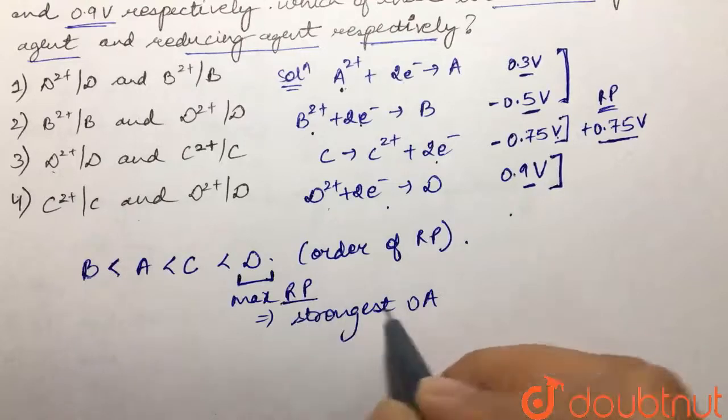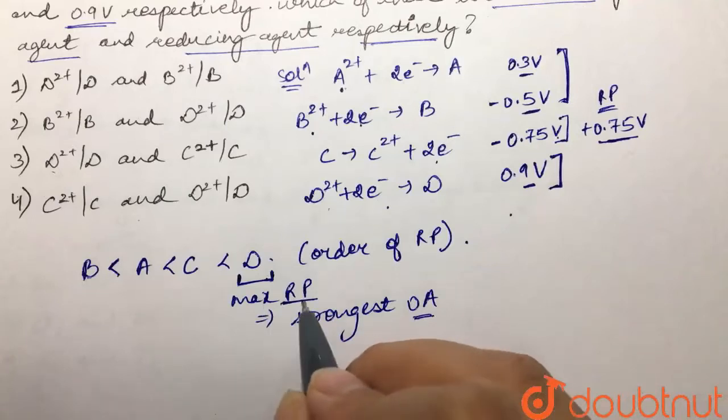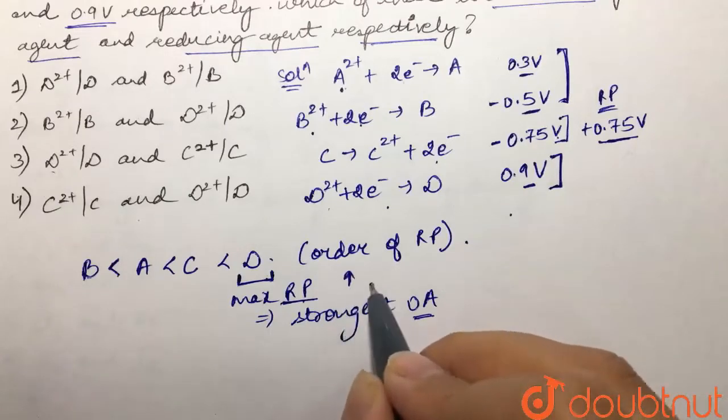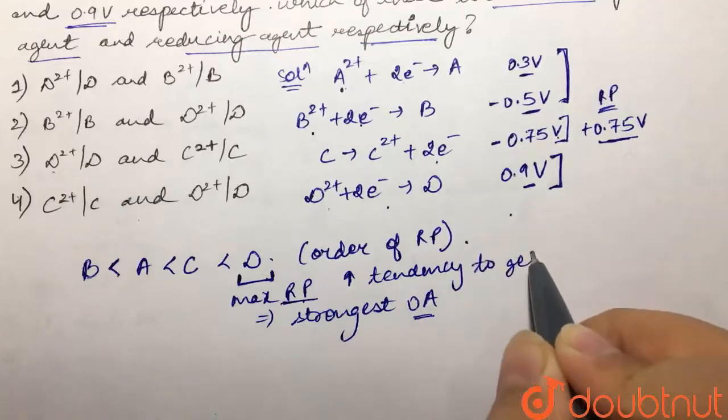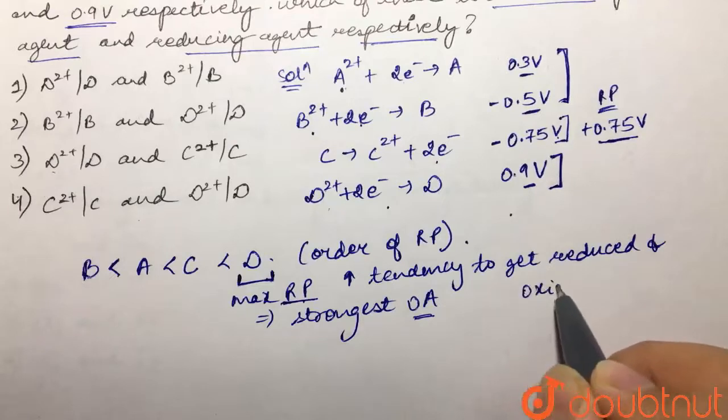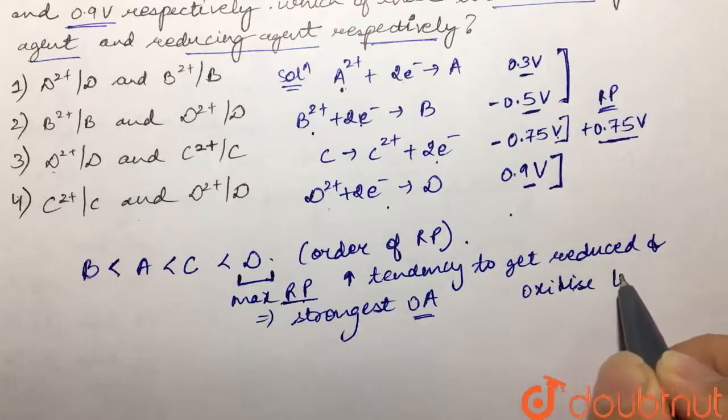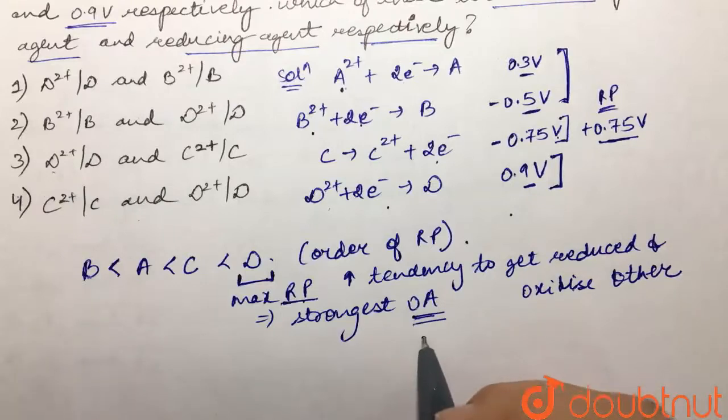Because what is the oxidizing agent? That oxidizes the other and itself gets reduced. So because it has maximum reduction potential, it would have a greater tendency to get reduced and oxidize the other, so going to act as strongest oxidizing agent.